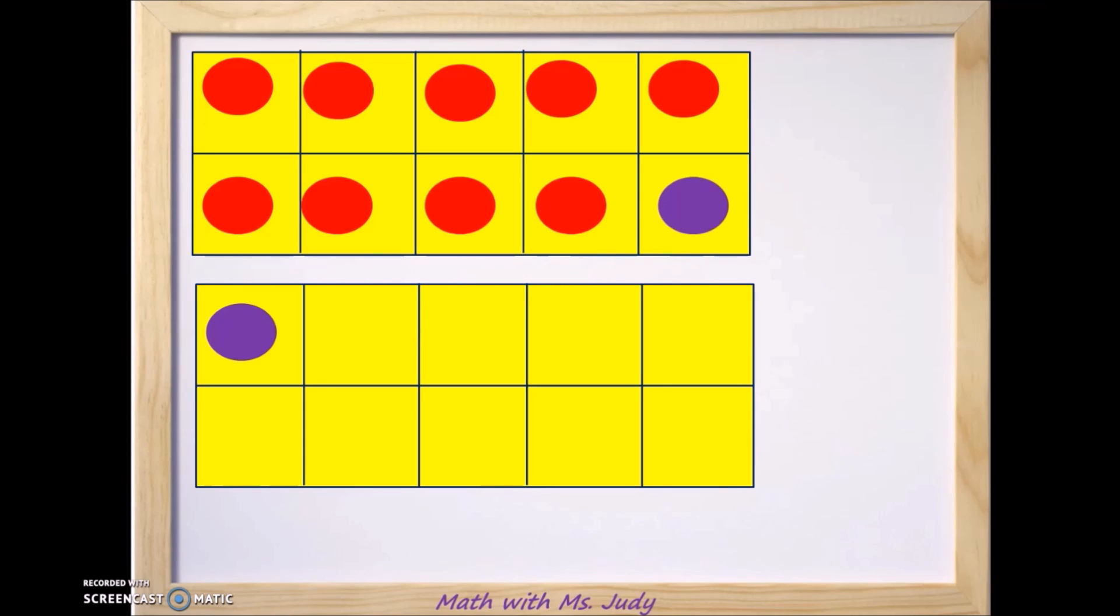So now how many do we have? Now we have 10. Wonderful. So we made 10. Now how many are down here on the bottom frame? 1. Well, that's easy. Now we know 10 plus 1. Well, 10 plus 1 is 11.